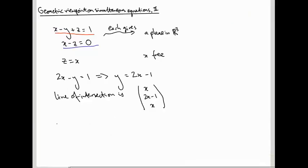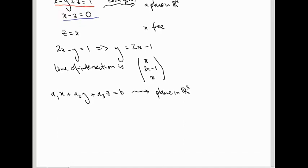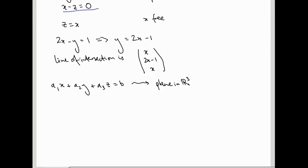More generally, any equation like a1x plus a2y plus a3z equals b will define for us a plane in R3. And just as for lines, we can think of these three numbers a1, a2, a3 as giving us the normal vector to the plane. So the vector a1, a2, a3 is at right angle to the plane.